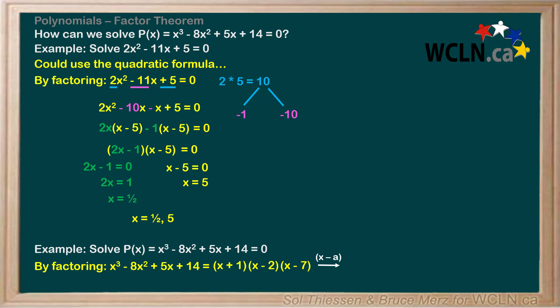Remember we observed factors of the form x - a correspond to roots at x = a. With that in mind, the factor of x + 1 can be rewritten as x - (-1), and the roots can be found by inspection. The three roots from these three factors are -1, 2, and 7.